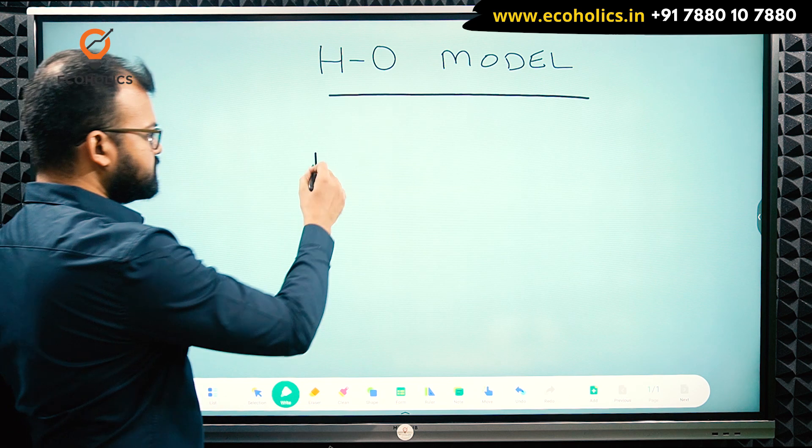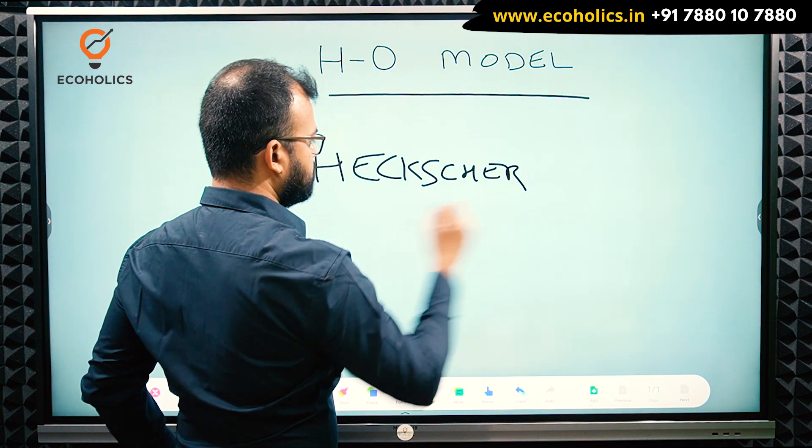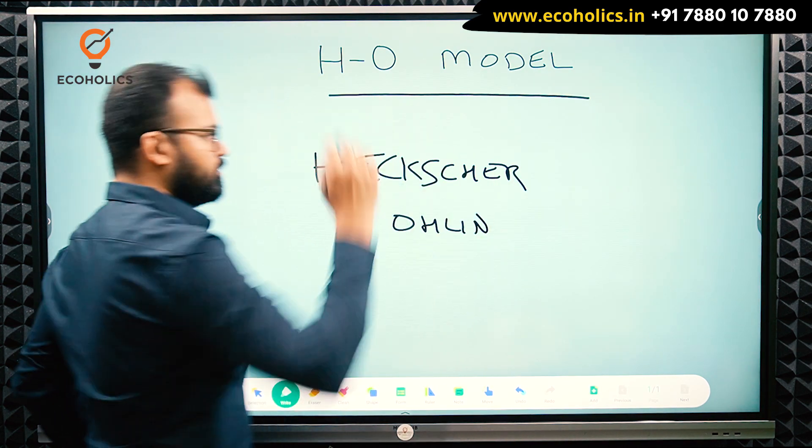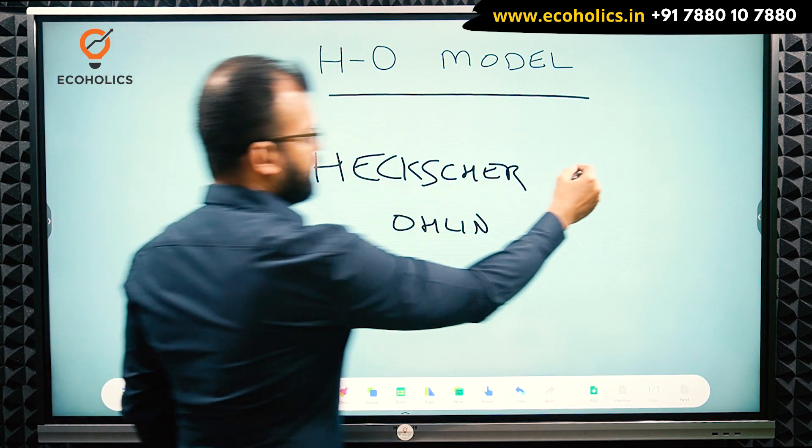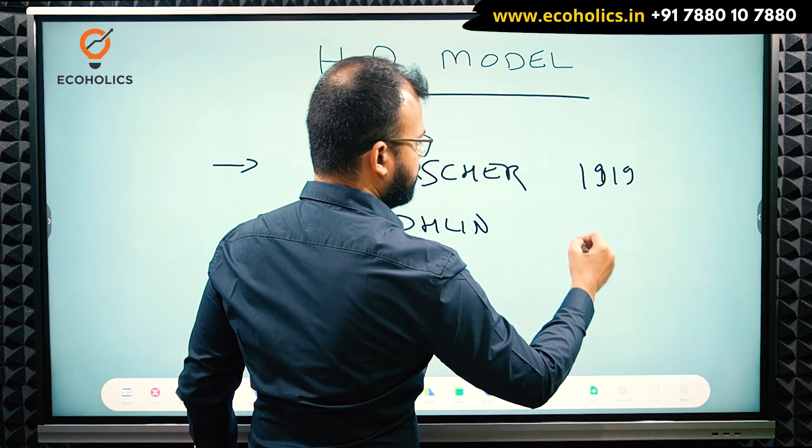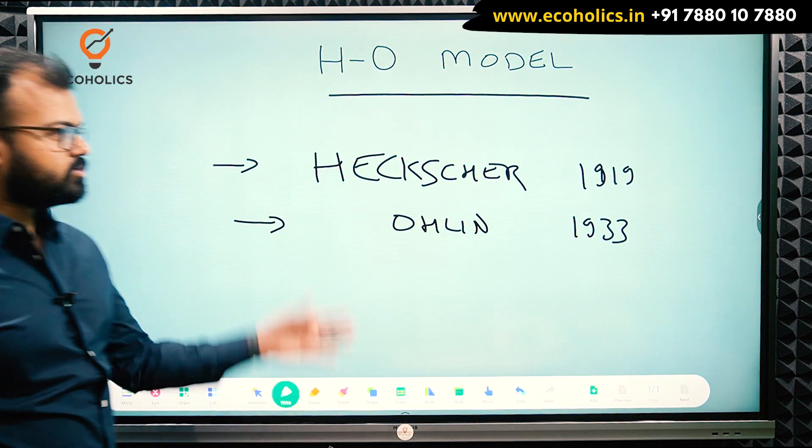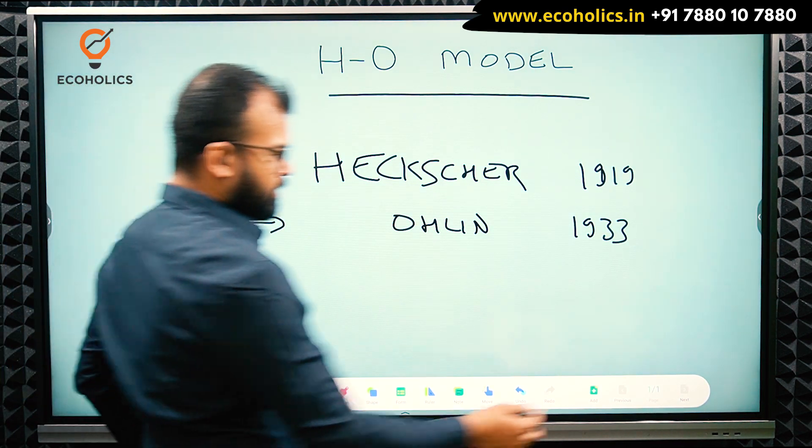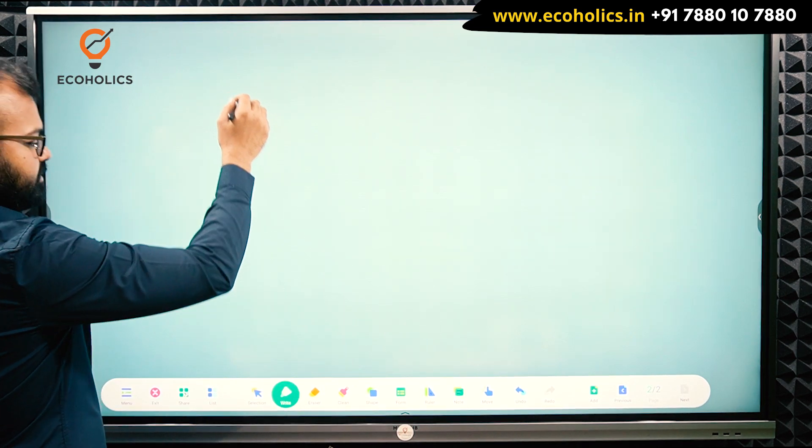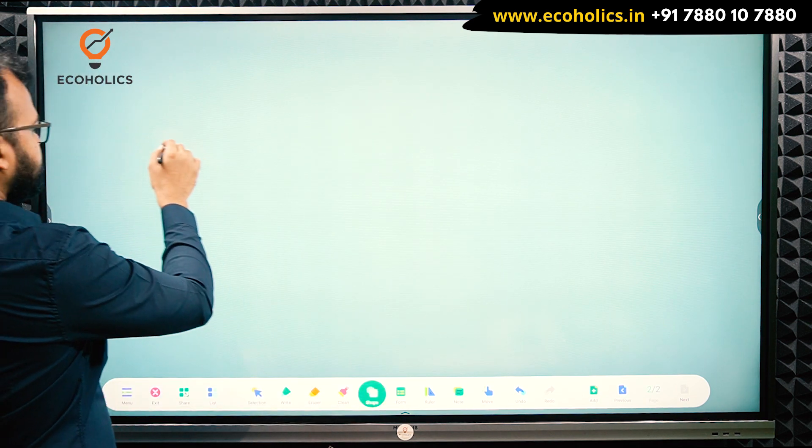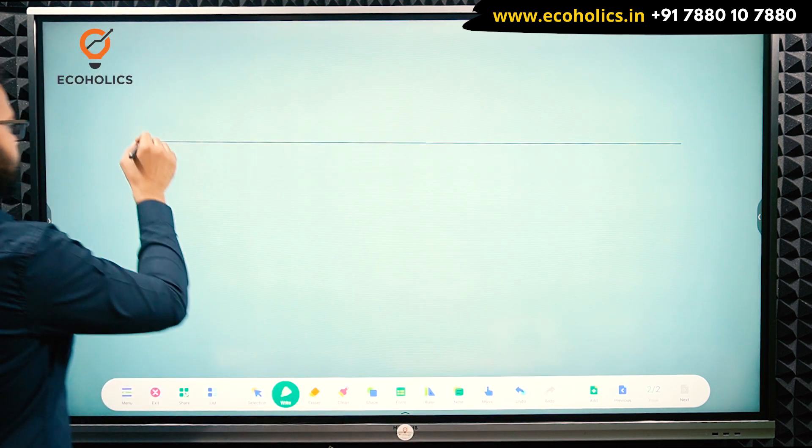This is the HO model, meaning Heckscher-Ohlin model. Now if you see the timeline, Heckscher gave this model in the year 1919 and Ohlin, his student, made some improvements in 1933. These are two important factual pieces of information. The Heckscher-Ohlin model, if you make a timeline, is also known as the modern theory of international trade.